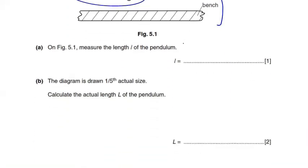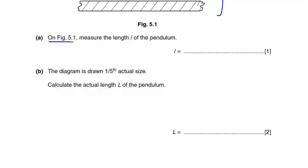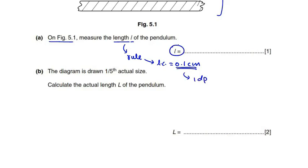Part a says: on figure 5.1, measure the length small l of the pendulum. Let's measure the length small l with a 30 centimeter plastic rule. The least count of a typical plastic rule is 0.1 centimeter, and 0.1 centimeter has one decimal place, so the measurement of small l should also be stated to one decimal place — like 10.5 centimeters.